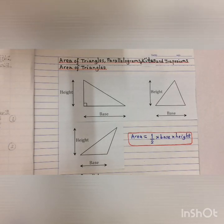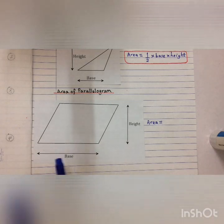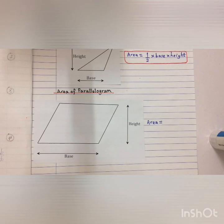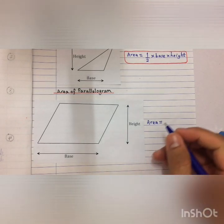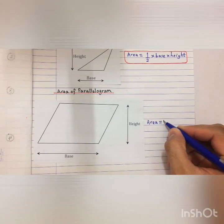You might want to pause the video to copy the notes. Second is to find the area of a parallelogram. This is your base and this is your height. To find the area of a parallelogram, you simply take your base and then times the height.